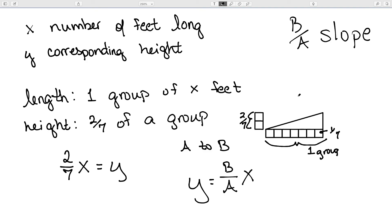For any pair of quantities in the proportional relationship, the slope tells us how many groups of the first it takes to make the second. In other words, how many groups of the x-coordinate we have to get the y-coordinate.